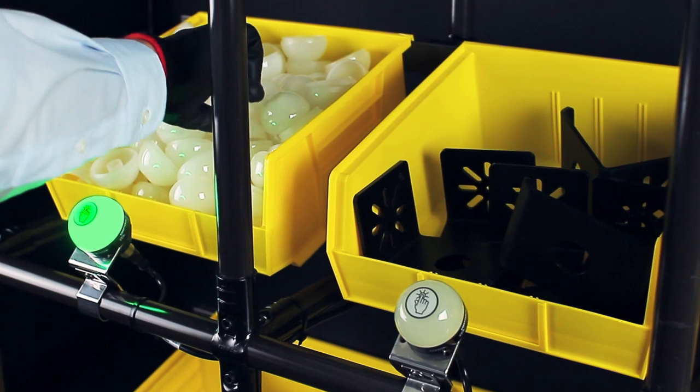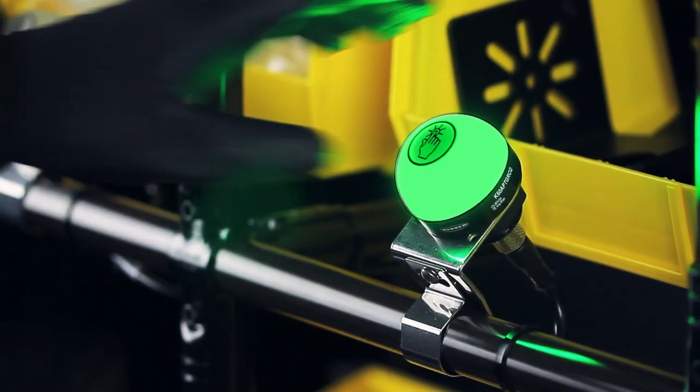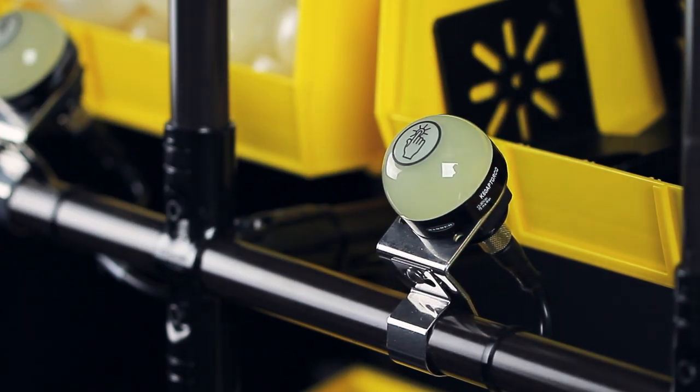When actuated with bare hands or work gloves, the illuminated housing changes from green to red for immediate feedback that a signal has been sent to the control system.